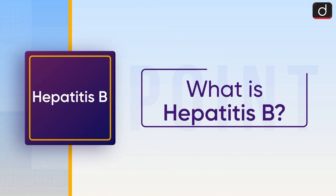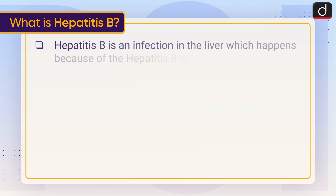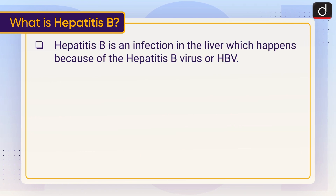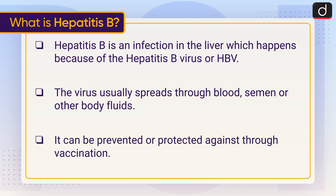Now let's understand what is Hepatitis B. Hepatitis B is an infection in the liver which happens because of the Hepatitis B virus, or HBV. The virus usually spreads through blood, semen, or other body fluids. It can be prevented or protected against through vaccination.